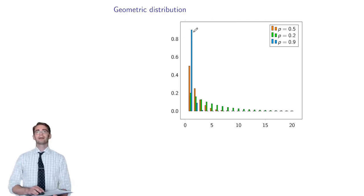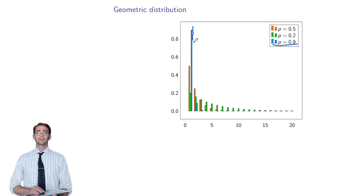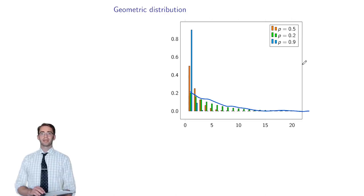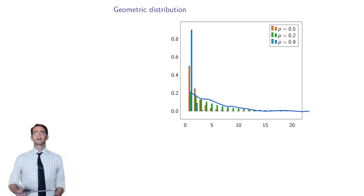The geometric distribution has a CDF of 1 − (1−p)^x — a pretty nice algebraic expression. It looks like an exponential decay. If p equals 0.9, there's a very high likelihood your first success happens at the first attempt, and things decrease quickly. If p is 0.5 or 0.2, the decay is softer because you have a lower likelihood of success, so the probability is more spread out over entries that are far away.